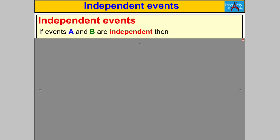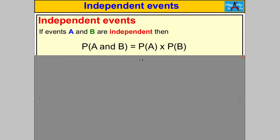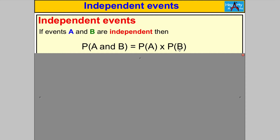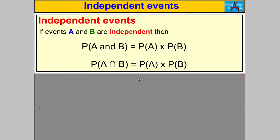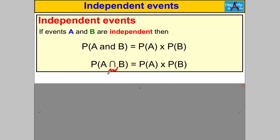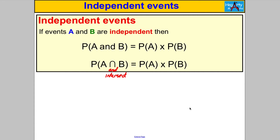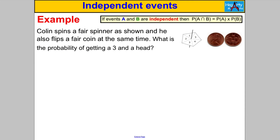Let's generalize that idea. If events A and B are independent, then the probability of A and B occurring is just the probability of A multiplied by the probability of B. There's a specific notation for this: the probability of A intersect B. This symbol — like an upside-down U — means 'and' in maths, or it means 'intersect.' So when events are independent, P(A ∩ B) = P(A) × P(B).